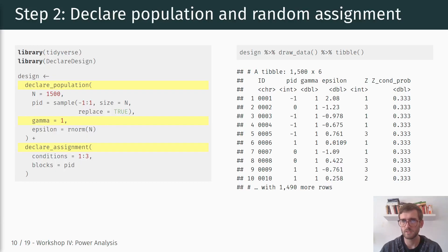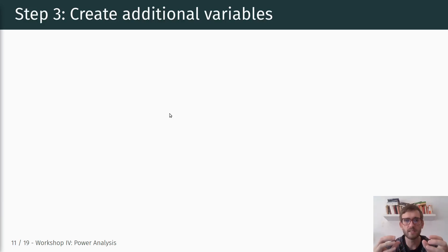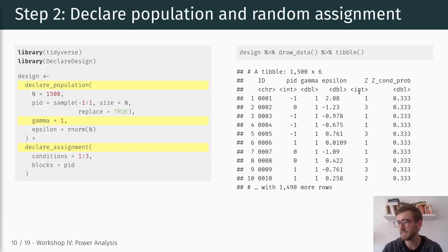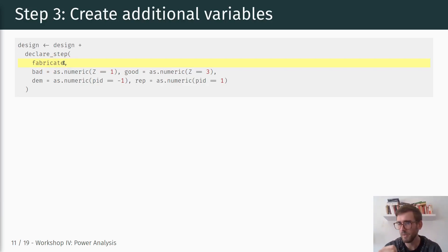The next step is an intermediate step where we have to create additional variables. Specifically, we have to turn the assignment variable and the party identification variables into variables we actually want to work with given our estimation strategy. The treatment assignment ranges from one to three and party identification is minus one, zero, and one. We ultimately want dichotomous indicators for treatment assignment and party identification. To do that, we use 'declare_step' and the 'fabricate' function from the fabricate package.